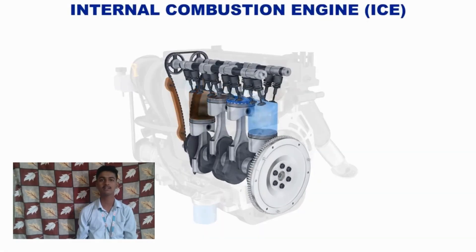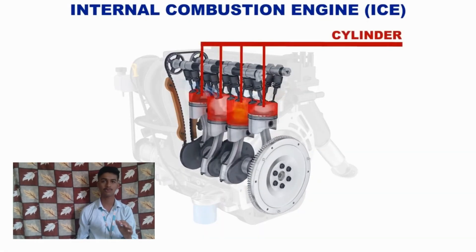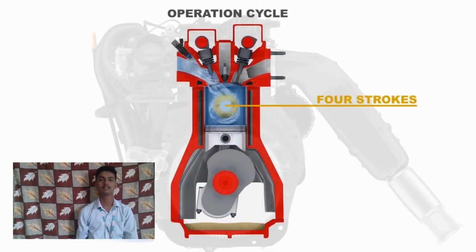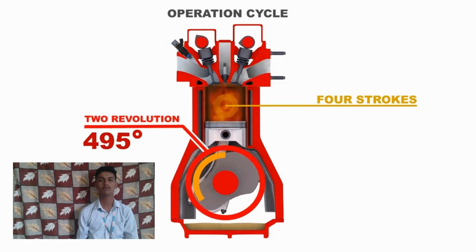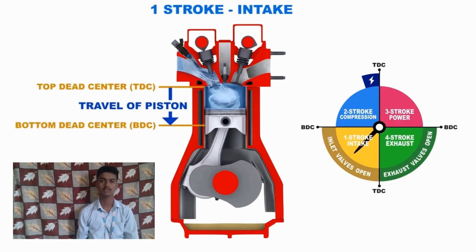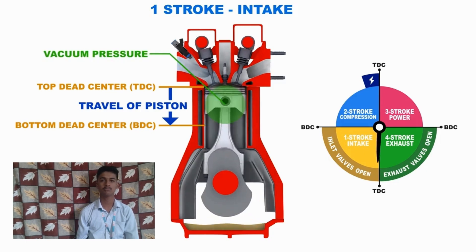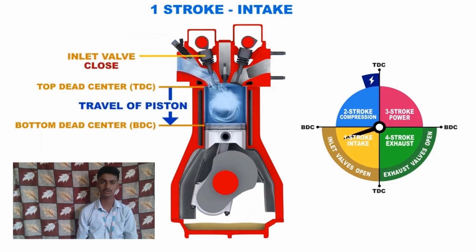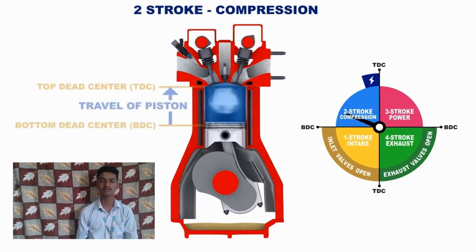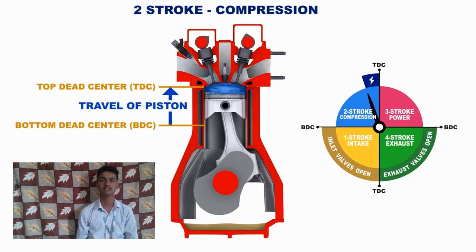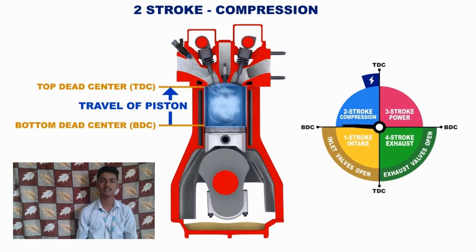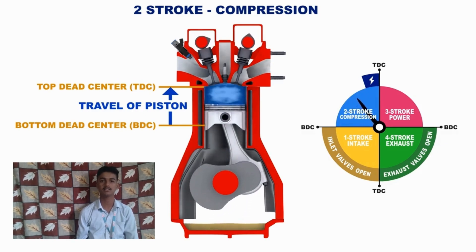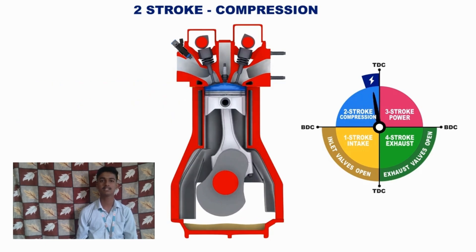Thank you. What is the Otto cycle? The Otto cycle is a thermodynamic cycle that describes how internal combustion engines, commonly found in cars, convert fuel into motion. The best example is automobiles. It consists of four main processes. The first stage is intake: the engine draws in a mixture of air and gasoline through the intake valve, filling the cylinder. The second step is compression: the piston moves upward, compressing the air-fuel mixture into a smaller space, raising both temperature and pressure inside the cylinder.